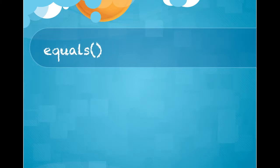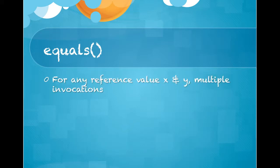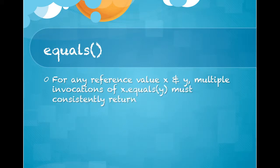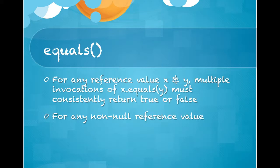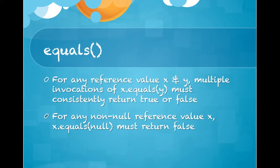Understanding the equals method: for any reference values x and y, multiple invocations of x.equals(y) must consistently return either true or false. For any non-null reference value x, x.equals(null) must return false.